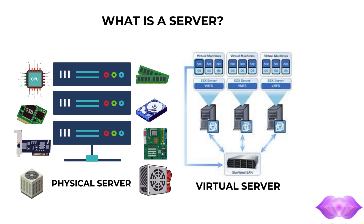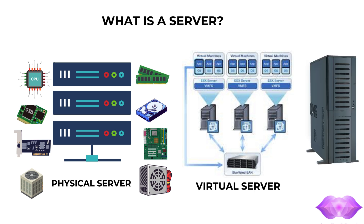Cooling systems are very essential for preventing hardware failure due to overheating. The chassis is a physical enclosure that houses all server components. Racks or towers host these chassis depending upon the type of server configured. The operating system is the software that manages all hardware resources and enables applications to run on them — these could be Windows Server, Linux, etc.